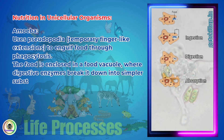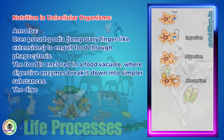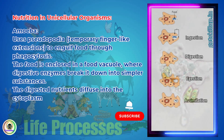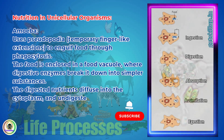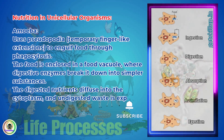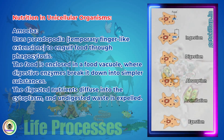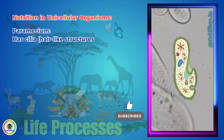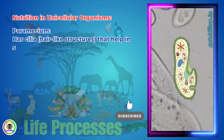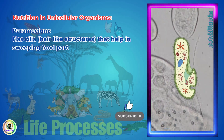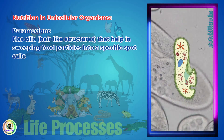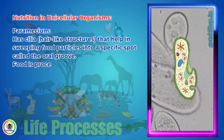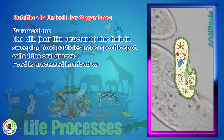The digested nutrients diffuse into the cytoplasm, and undigested waste is expelled. Paramecium has cilia — hair-like structures — that help sweep food particles into a specific spot called the oral groove. Food is then processed in a food vacuole.